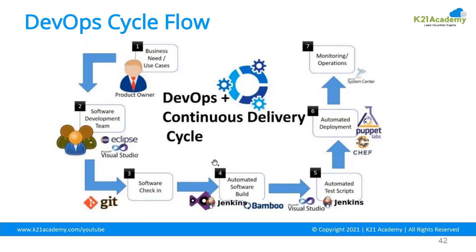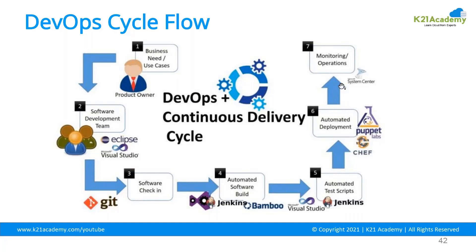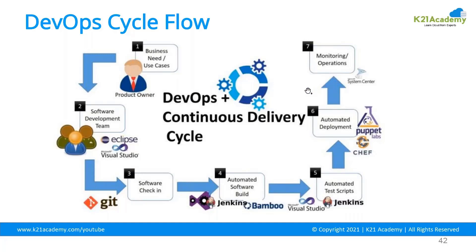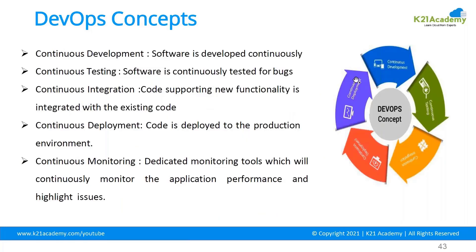DevOps is all about continuous development, continuous integration, continuous testing, continuous deployment, and continuous monitoring — these are the five main stages. You also have continuous management using tools like Jira for project management.